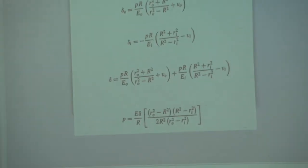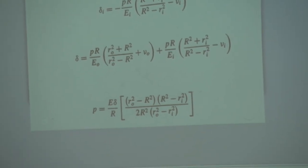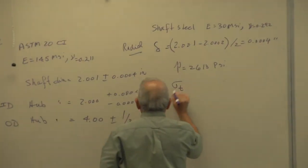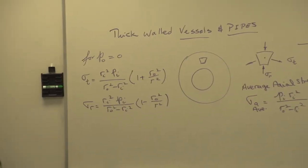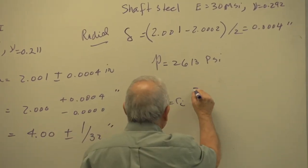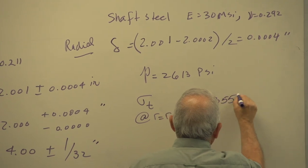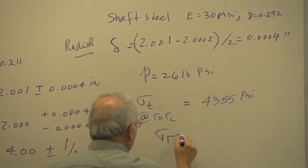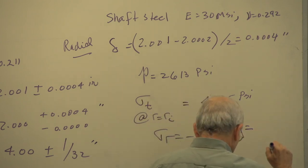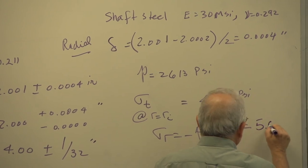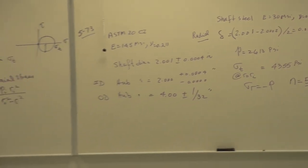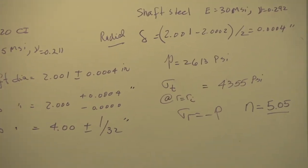The collar is ASTM 20 cast iron with E equals 14.5 MSI and nu equals 0.211. The shaft is steel with E equals 30 MSI and nu equals 0.292. Put them into the interference equation and solve for P. Sigma T at R equal to RI — the most critical point — equals 4355 psi, and sigma R equals minus P. Once you have those two, you can solve for the factor of safety, which comes out to be 5.05 according to the modified Mohr theory.